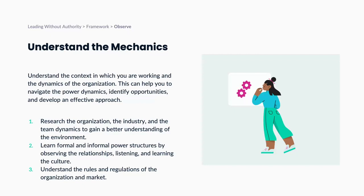The first step is understanding the dynamics — observing the context in which you're working and how the organization operates. This helps you understand how power balances are divided within that organization, so you can identify opportunity areas and develop an effective strategy. First, understand the organization, the industry, and how different teams operate within the environment. Then learn the formal and informal power structures by observing how people relate to each other, how people listen, how people speak, and most importantly, learning the culture of this organization — every single organization has a distinct culture.